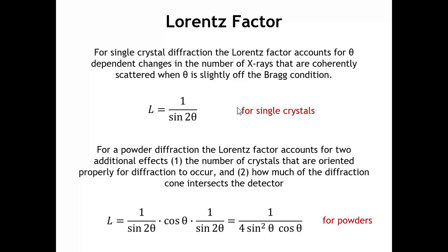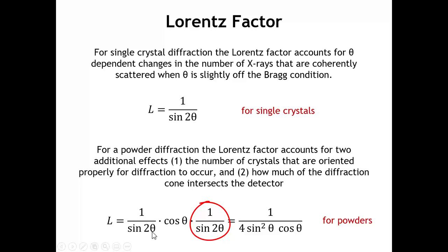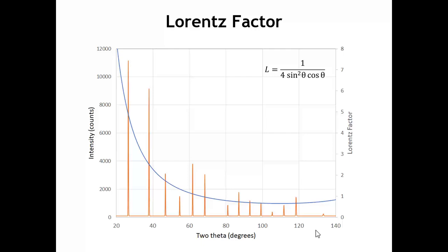In a powder experiment, there are other theta-dependent effects put into the Lorentz factor. Even with a completely random orientation of crystals, the number of crystals oriented properly for diffraction is actually dependent on cosine theta — larger at low angles than at high angles. Also, in a diffraction experiment the crystals scatter X-rays in cones, and our detector takes just a slice of that cone. When the cone is very small, we take a bigger slice than when the cone gets large, giving a 1 over sine 2-theta term. Combining all three terms gives the correction: 1 over 4 times sine squared theta times cosine theta.